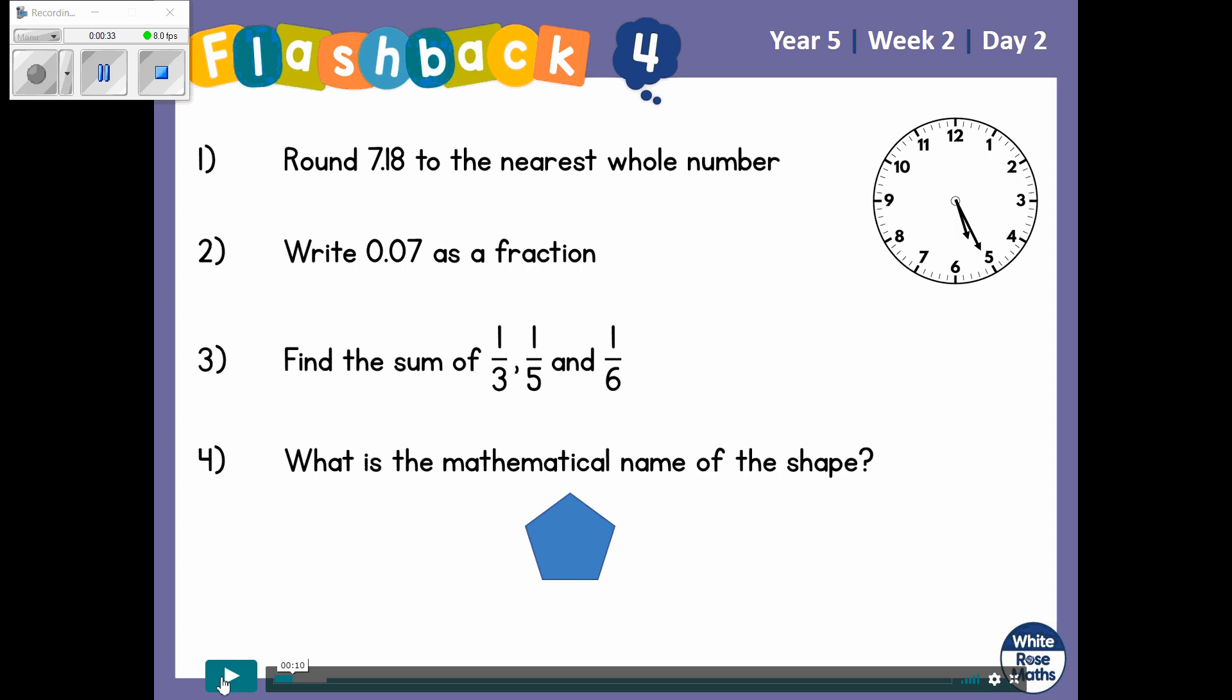Okay, I'll give you slightly longer. So we're going to round 7.18 to the nearest whole number. We will write 0.07 as a fraction. We will find the sum of 1/3, 1/5 and 1/6.